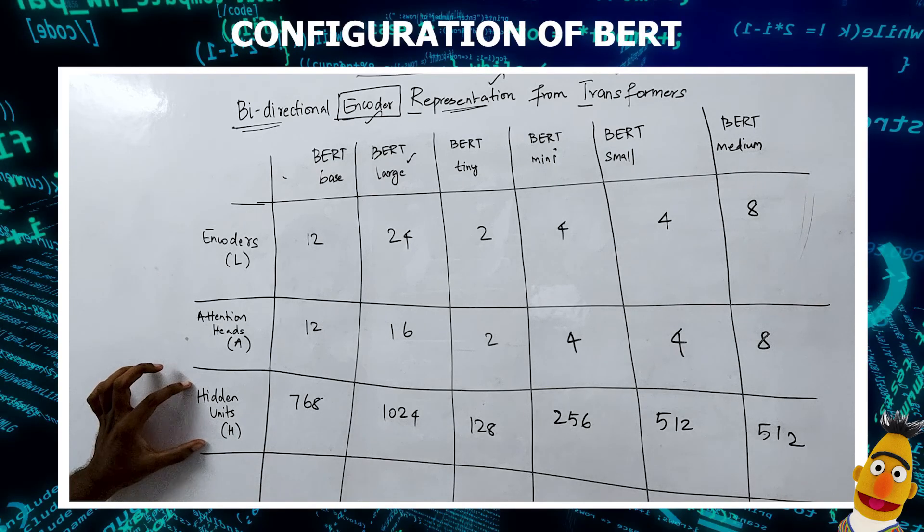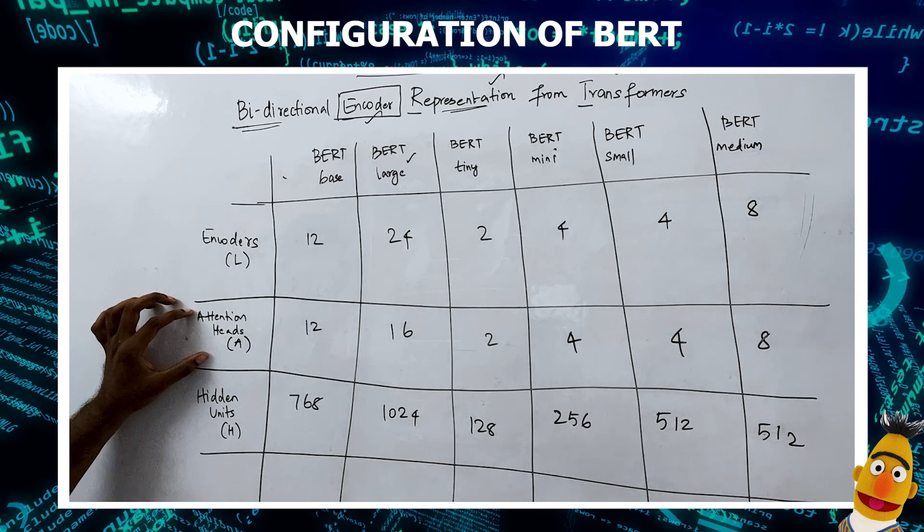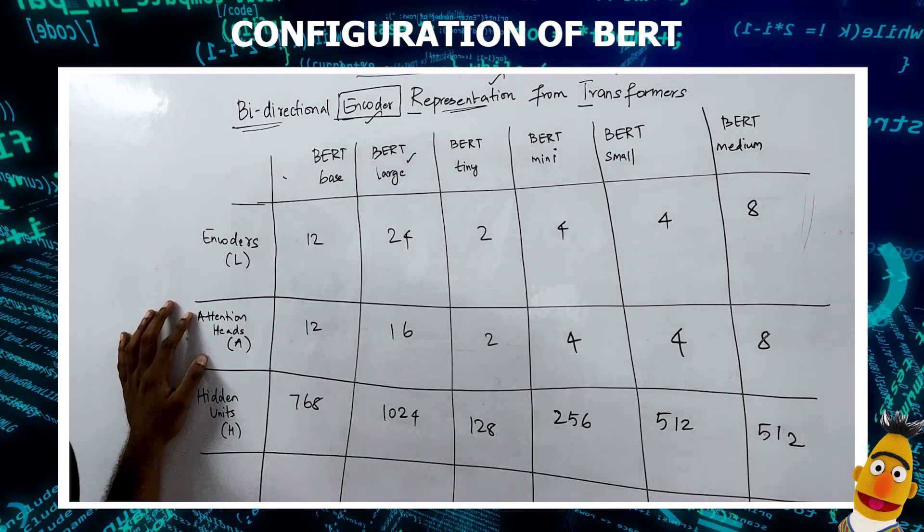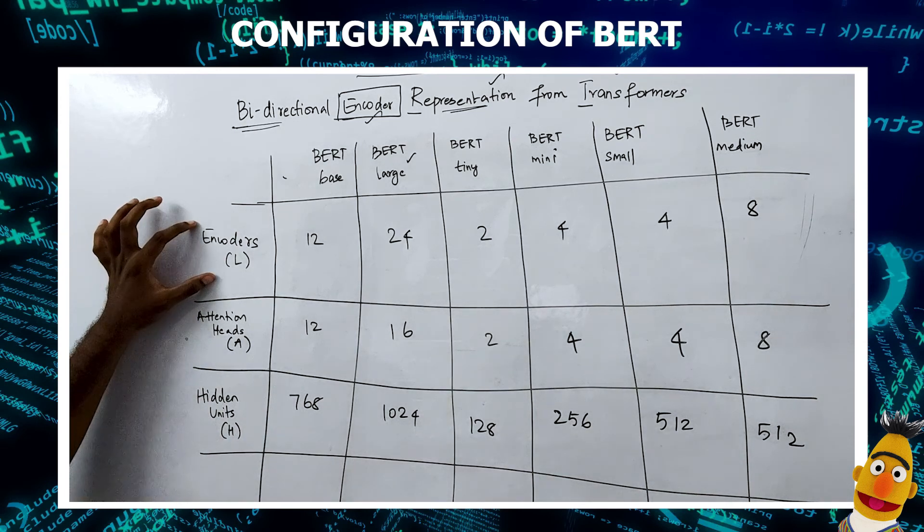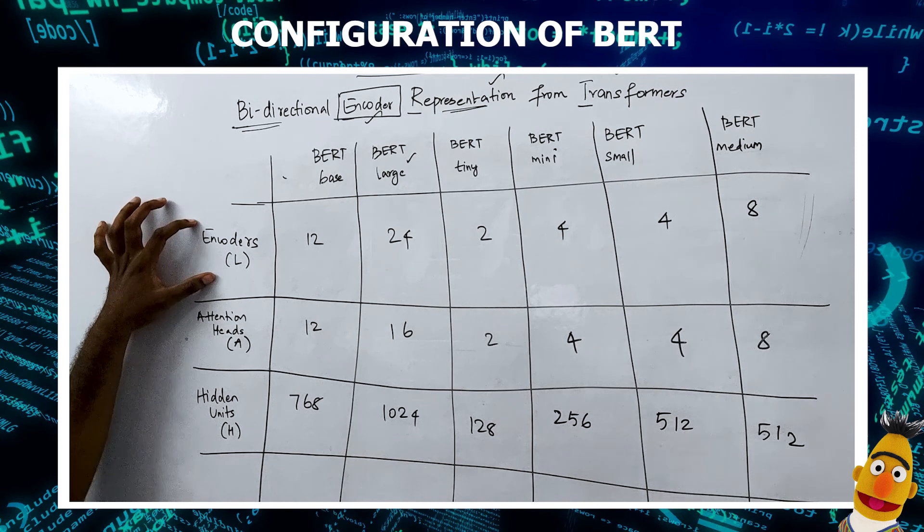Hidden units are the number of hidden neurons in the final feed forward layer. Attention heads are the number of self-attention heads present within each encoder, and finally we have the number of encoders that are stacked on each other.